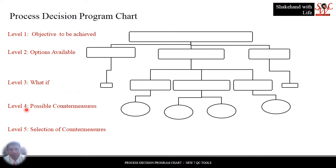At level 4, what are the possible countermeasures to check unwanted consequences. At level 5, select the best possible countermeasures.